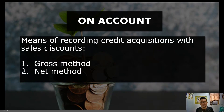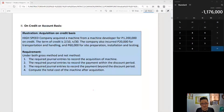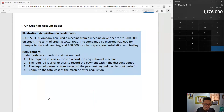There are two means of recording credit acquisitions with sales discounts depending on company policy: it could either be the gross method or net method. However, it is important to remember that whether you use gross or net method, the amount of property, plant, and equipment that you should be capitalizing should be the same. Here's another illustration from your module — this time it is about on credit or account basis mode of acquisition.